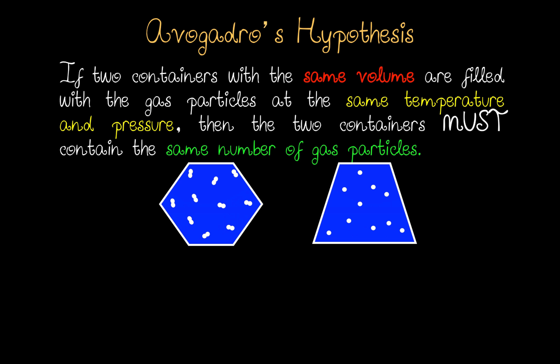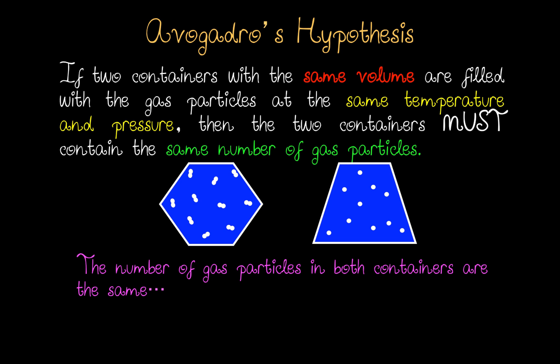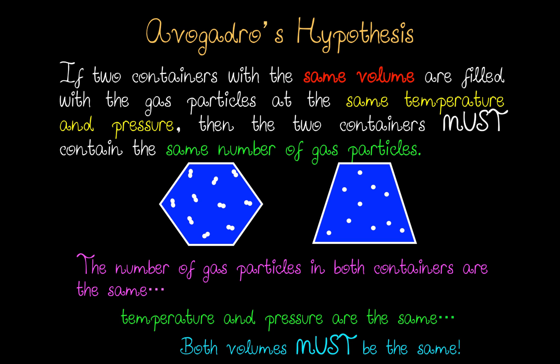If two containers with the same volume are filled with gas particles at the same temperature and pressure, then the two containers must contain the same number of gas particles. Consider the container on the left, made up of 10 gas particles, and the container on the right, made up of 10 gas particles. Since the number of gas particles in both containers are the same and the temperature and pressure are the same, both volumes must be the same.